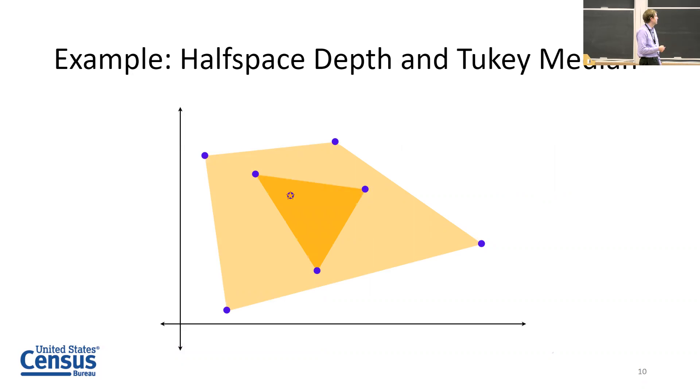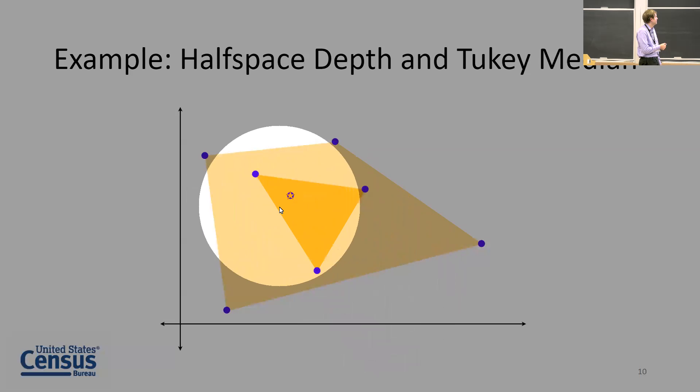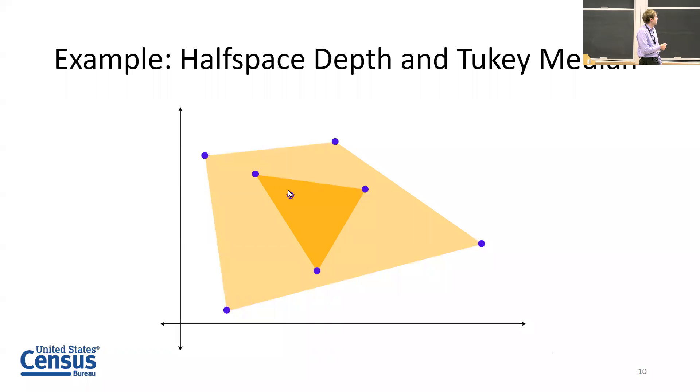There's two more in addition to that first one. We have this triangle - every point in the triangle has halfspace depth greater than or equal to two. Then finally this one data point right here has halfspace depth equal to three, so that's also the Tukey median.